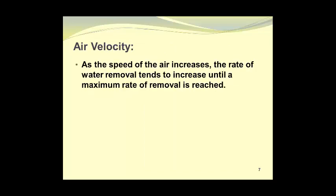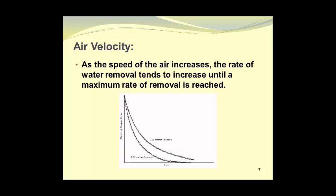As the speed of the air increases, the rate of water removal tends to increase as well, until a maximum rate is reached. In another experiment with peppers, two air velocities are compared. The slower rate of 0.25 meters per second dries the pepper slices more slowly than 0.5 meters per second. Tests at 0.75 and 1.0 meters per second showed very little improvement over the 0.5 meter per second velocity.